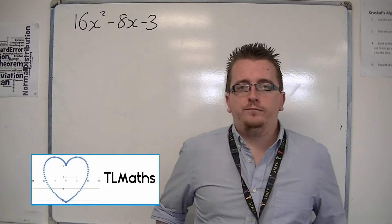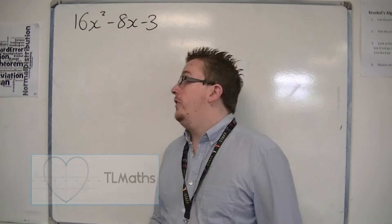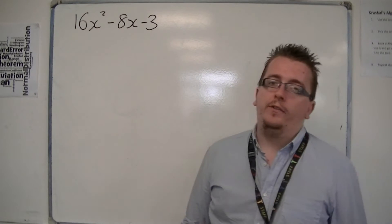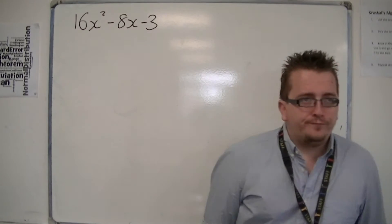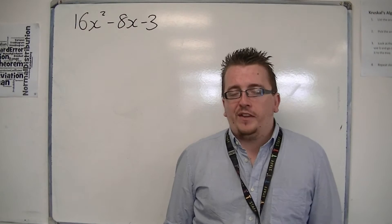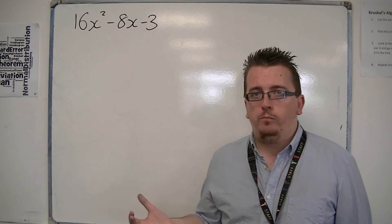So let's say you've got the worst possible thing to factorise. You've got something that looks like this: 16x squared minus 8x minus 3. The fact that it's 16, you've got this large number in front of the x squared, is going to cause problems.